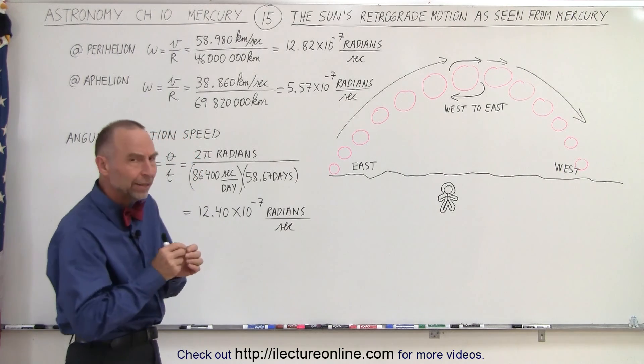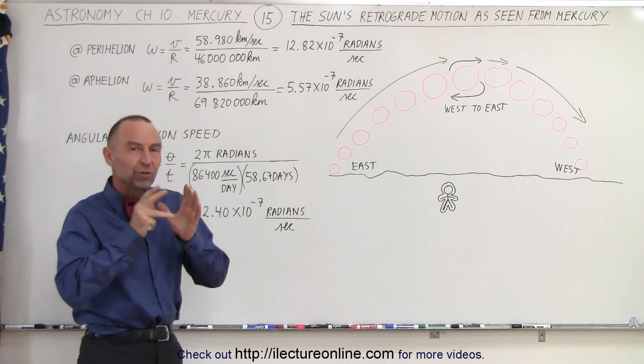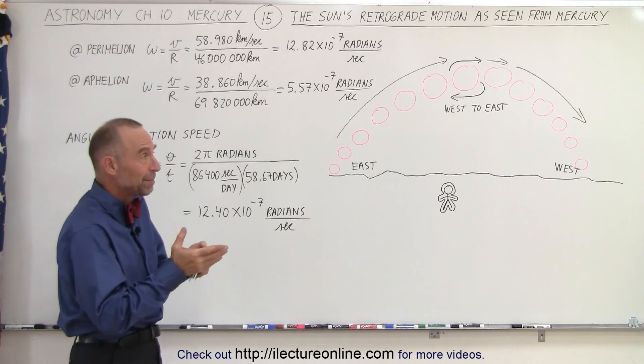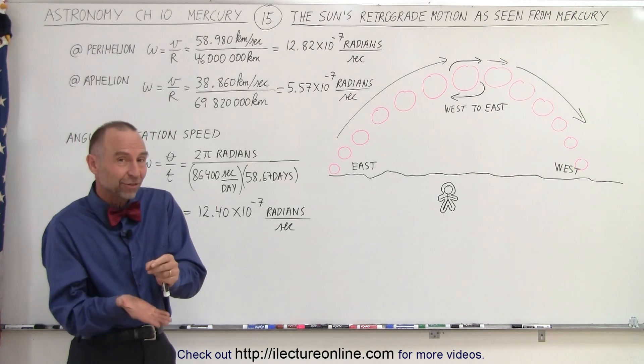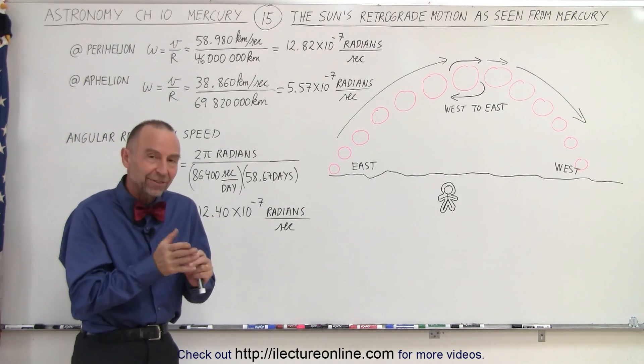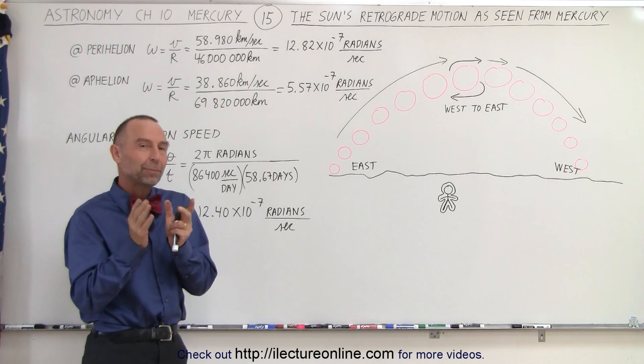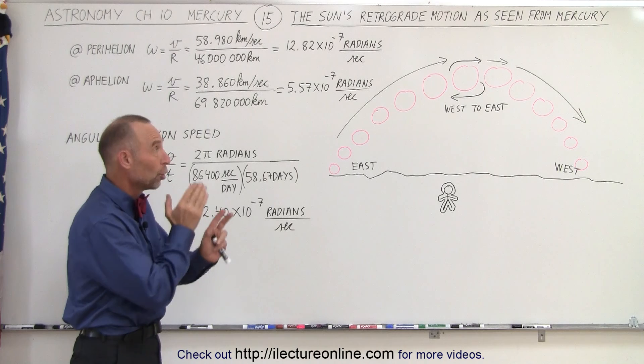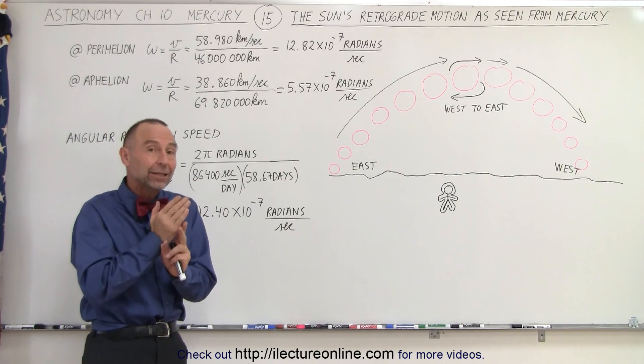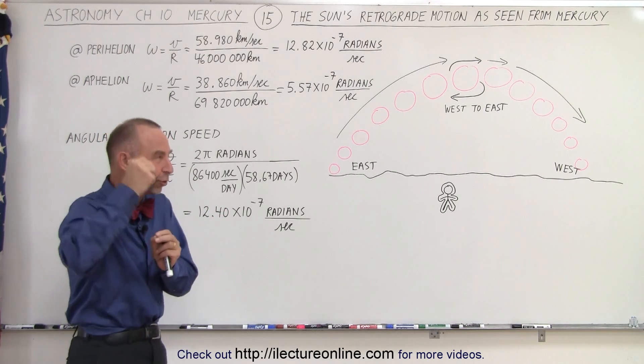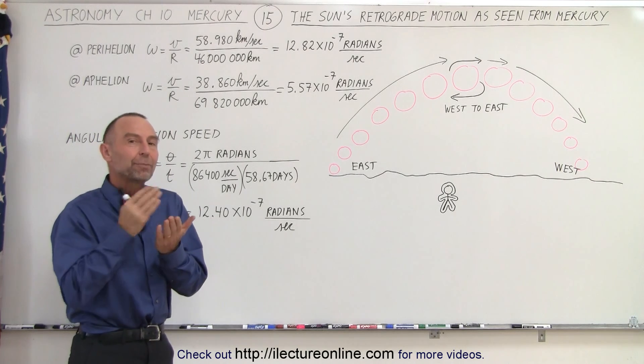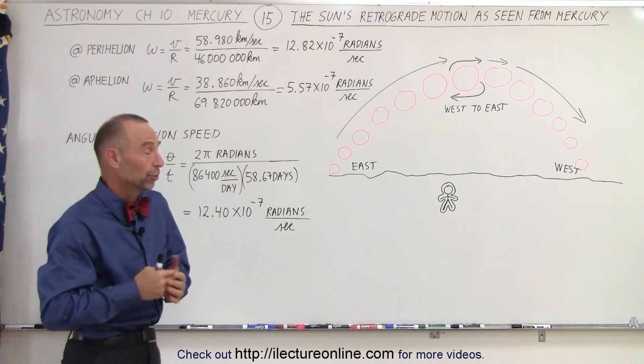That happens when the high noon position of the Sun, which would be basically 44 Earth days since the Sun began to rise, if that noon position of the Sun coincides with perihelion, the position where Mercury is closest to the Sun, the Sun will actually appear to move in retrograde motion.